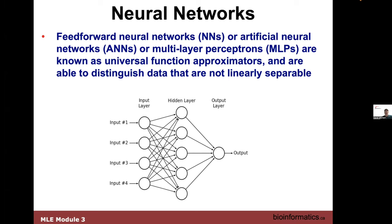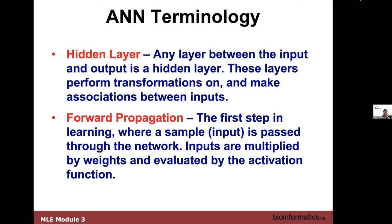This again is the architecture: there's the input layer — could be one node, two nodes, four nodes. A hidden layer could be any number of nodes. Then an output layer, which could be one or two nodes — usually not a lot, but doesn't have to be a single output. There's terminology: hidden layers are the collections of nodes between input and output that help make connections and allow more complex logic or algebra functions to be generated.